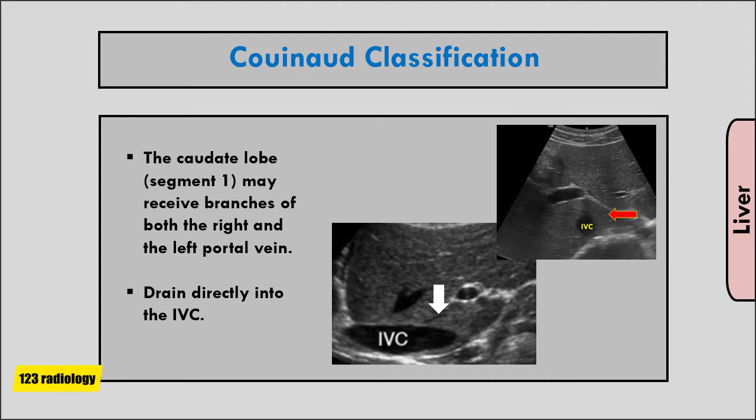The caudate lobe, segment 1, may receive branches of both the right and the left portal vein. In contrast to the other segments, segment 1 has one or several hepatic veins that drain directly into the IVC.